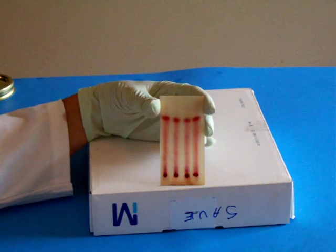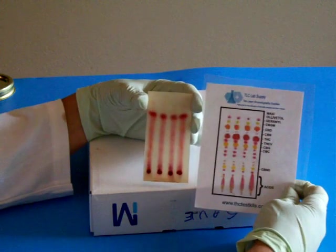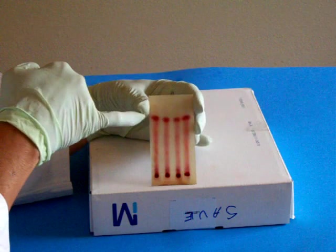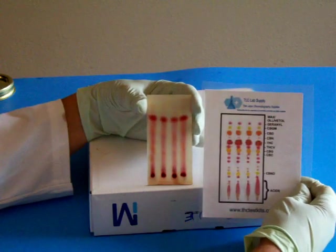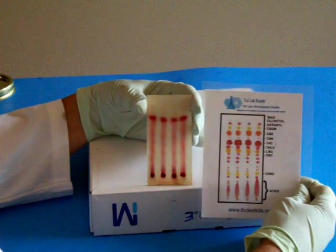You can also reference our fingerprint chart to see where your cannabinoid results sit on the plate. You can clearly see here the THC line. When different substances are mixed, the color of the results may not match the coloring on the fingerprint chart.